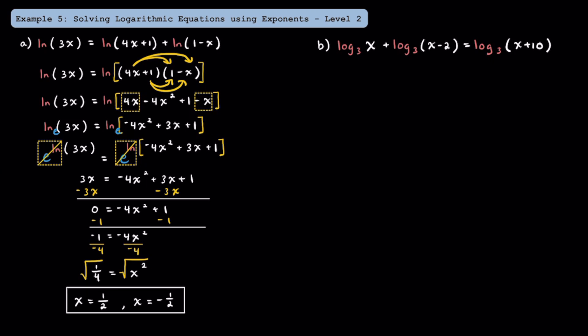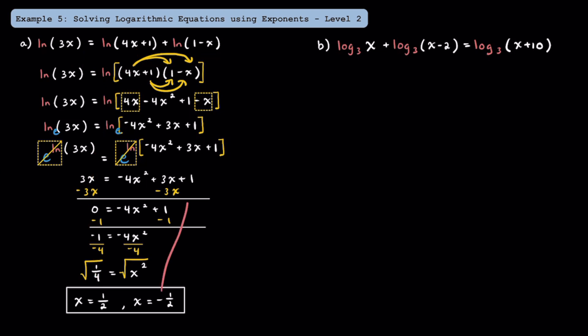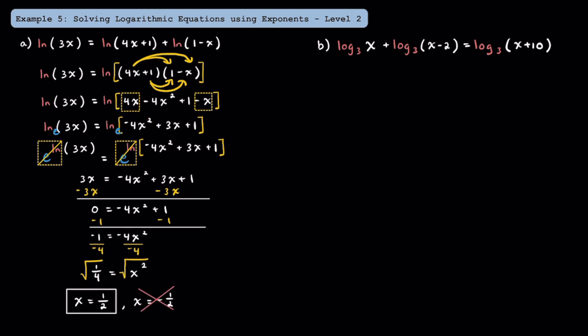Now that we have our solutions, remember that it's important to check for extraneous solutions. This positive 1 half is okay because it gives positive values when plugged in. The issue with negative 1 half is that 3 times negative 1 half gives a negative value inside the logarithm, which means x equals negative 1 half is actually an extraneous solution, and we're just going to leave our answer as x is equal to positive 1 half.